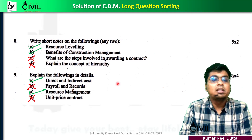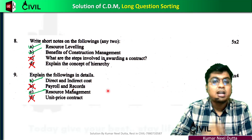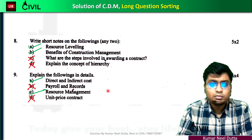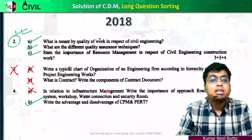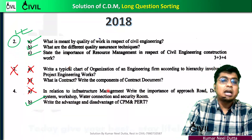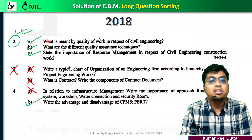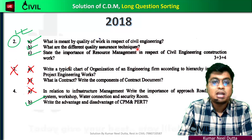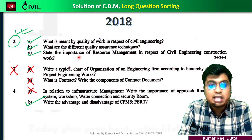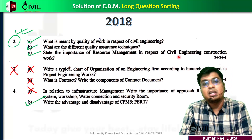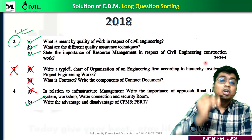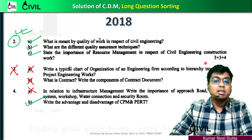Resource management, etc. The answer is about resource management, quality assurance. The answer is about resource management with respect to civil engineering construction, and the answer is about cost management.